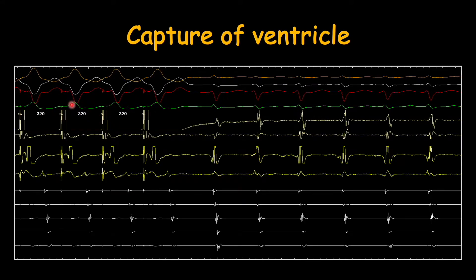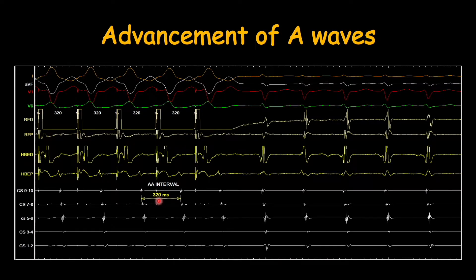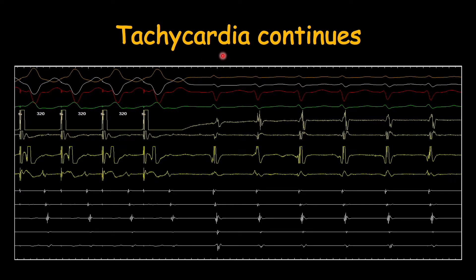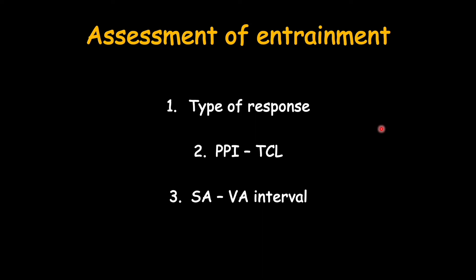Here we can see that the ventricle is being fully captured by the pacing stimulus, as evidenced by the widening of the QRS at the time of pacing compared to native tachycardia where QRS morphology is narrow. Advancement of A waves can be assessed by measuring the AA interval. The AA interval and pacing cycle length are both 320 milliseconds, which means advancement of A waves has occurred and the tachycardia has been reset. The third condition was that tachycardia should continue once we stop pacing — this is the last pacing stimulus, and after that the tachycardia continues. Since all three conditions of entrainment are fulfilled we can go ahead with assessment of entrainment.